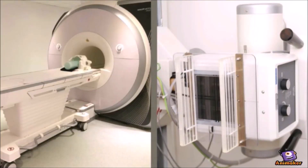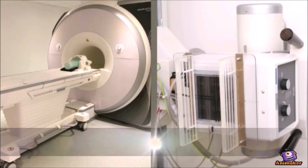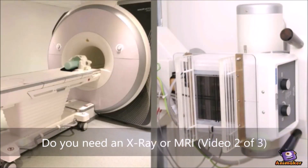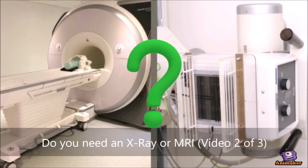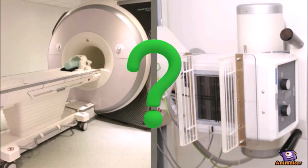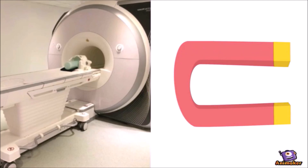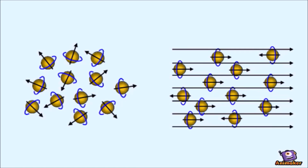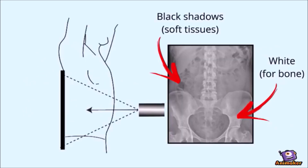Welcome back to this three-part video mini-series on x-ray and MRI. In video one, we looked at how x-ray and MRI work. Specifically, an MRI is a big magnet that spins hydrogen ions to create an image, and x-ray beams get blocked by denser tissues like bone, and that creates an image with shadows.